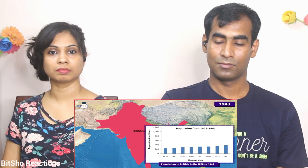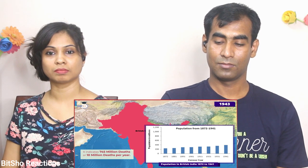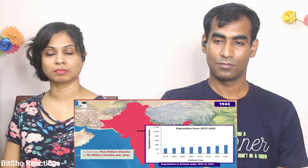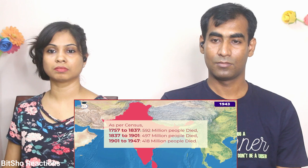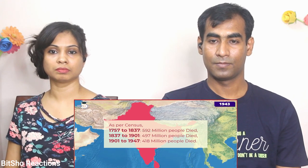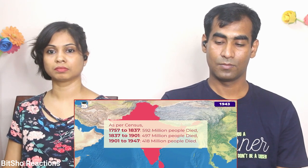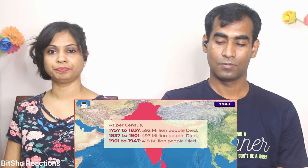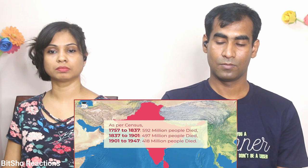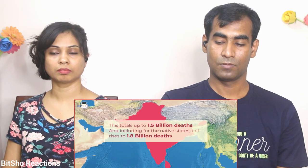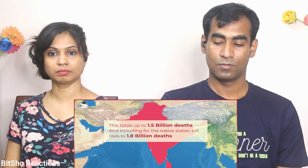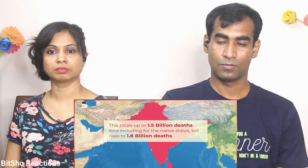यदि बच्चे पैदा होते हैं, तो 1860 से 1934 के बीच population growth क्यों नहीं दिखती? 1860 से 1934 के बीच India की population 292 million ही रही, in spite of a very high birth rate। इससे indication है कि इस दौरान 745 million deaths और on an average 10 million deaths per year हुई थीं। Indian census data के मुताबिक 1757–1837 के बीच 592 million, 1837–1901 के बीच 497 million और 1901–1947 के बीच 418 million estimated deaths हुई — roughly 1.5 billion, और native states को add करें तो 1.8 billion।